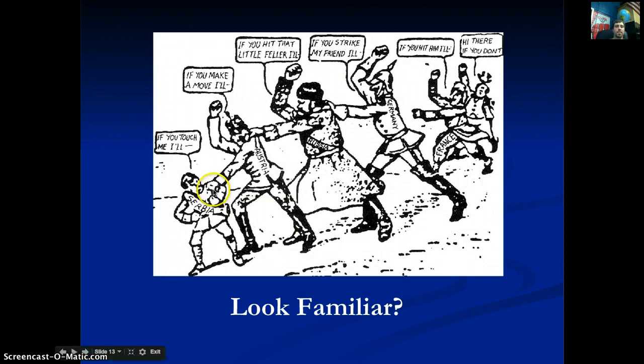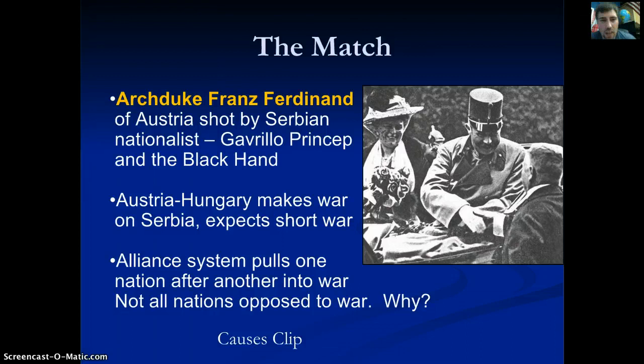The alliance system in action: Serbia gets attacked by Austria-Hungary. Russia, allied with Serbia, attacks Austria-Hungary. Austria-Hungary's ally Germany then attacks Russia. France, allied with Russia, jumps in. Germany turns to attack France, which causes Britain to enter. You can see how the alliance system pulls one nation in after another — just like that street fight example.